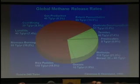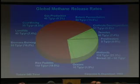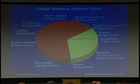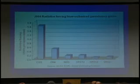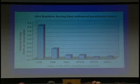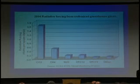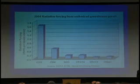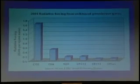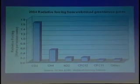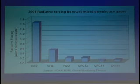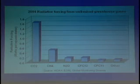Methane concentrations have increased by more than a factor of two. It's very plausible that human-controlled methane emissions have more than doubled the amount of methane in the atmosphere. Remember that the net sunlight received and absorbed by the Earth-atmosphere system is about 237 watts per square meter.